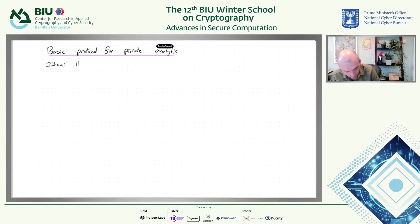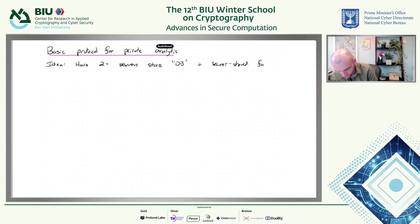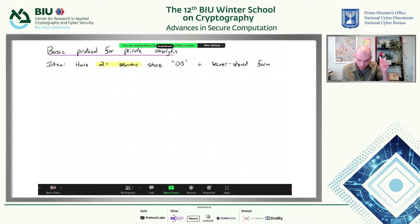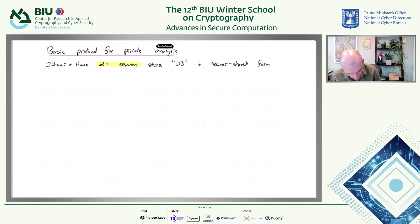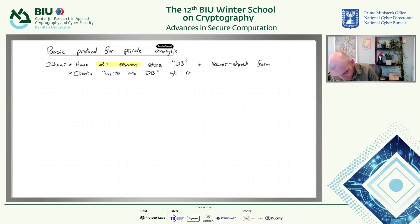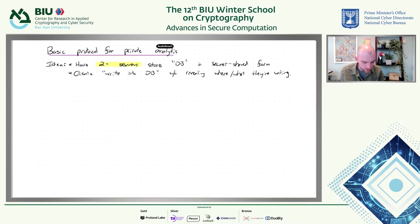We're going to need two or more servers. Instead of just Mozilla, we have a couple of data collection servers. Once we have this setup, it allows the clients to write their secret data into this database without revealing where or what they're writing. This may make you think of function secret sharing or distributed point functions — and that's exactly right. This is one of the tools we use for this.